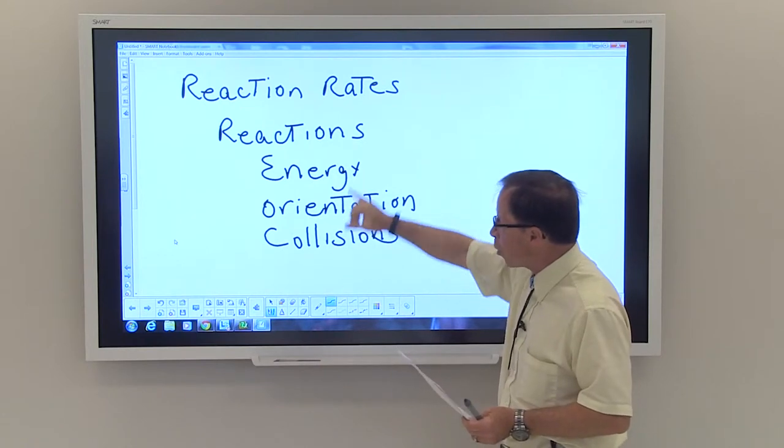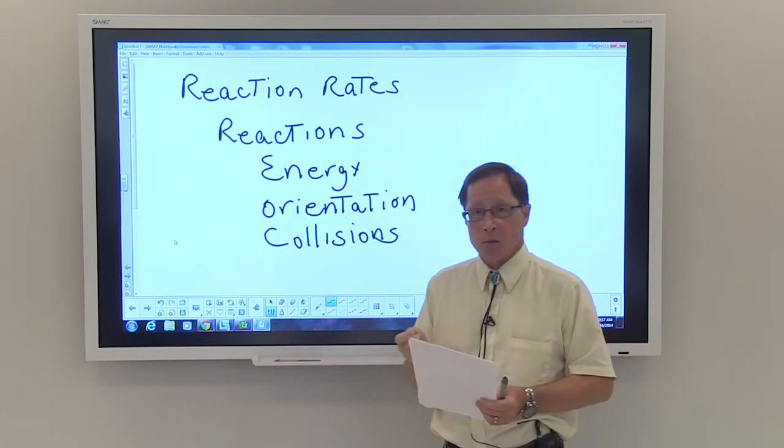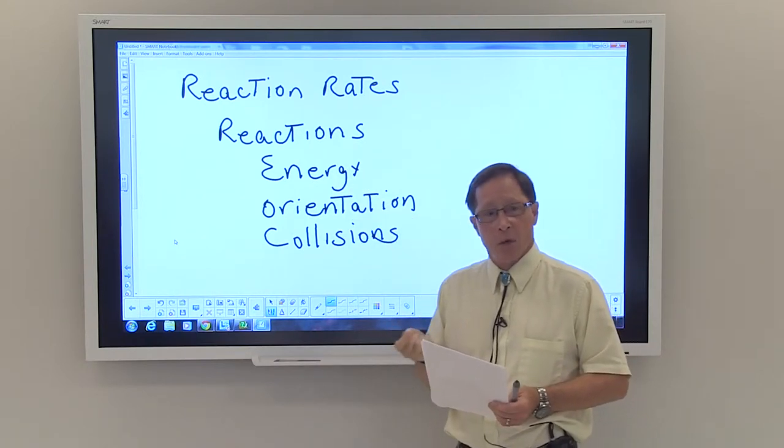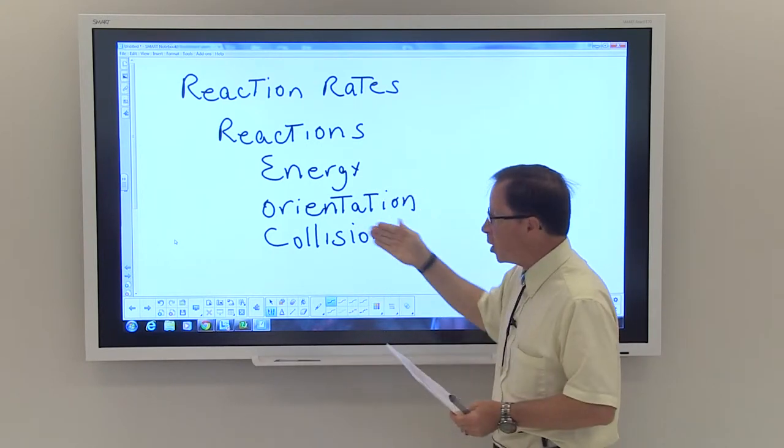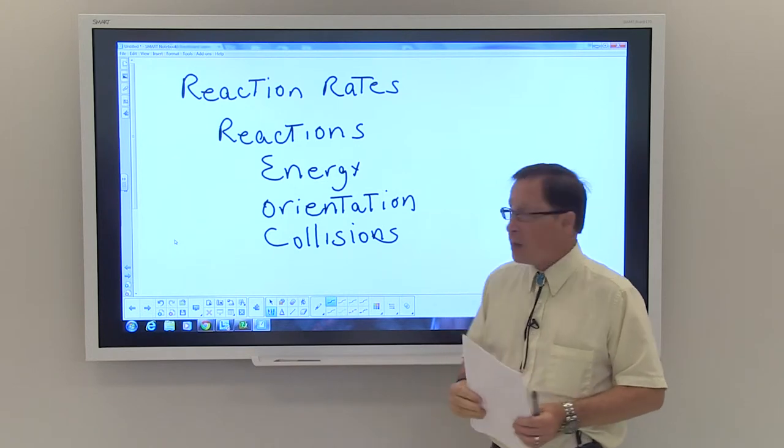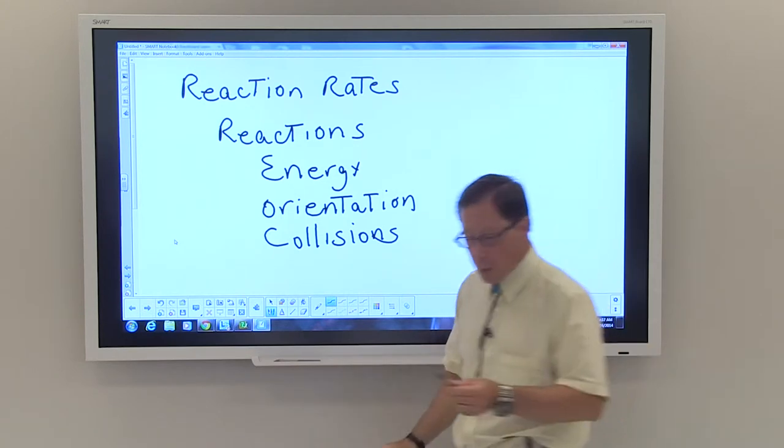Of the three, the orientation is the one that we as chemists would have more difficulty controlling. But we can look at energy and we can look at collisions. And energy is actually fairly important.